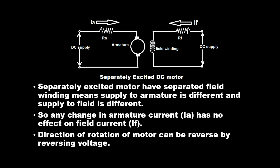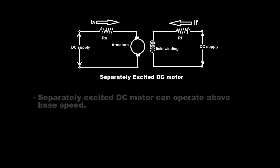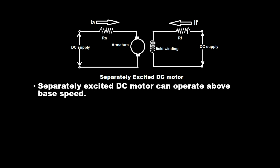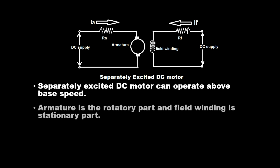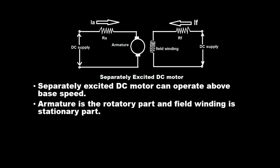The direction of rotation of the motor can be reversed by reversing the voltage. The separately excited DC motor can operate above base speed. The armature is the rotatory part and the field winding is the stationary part.